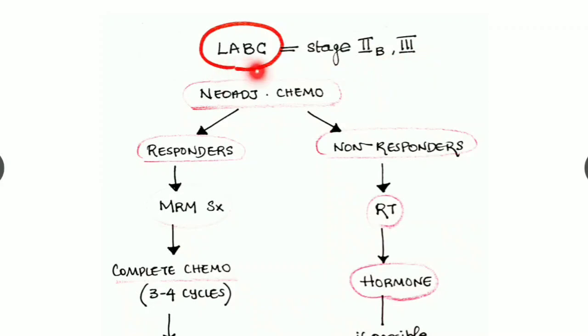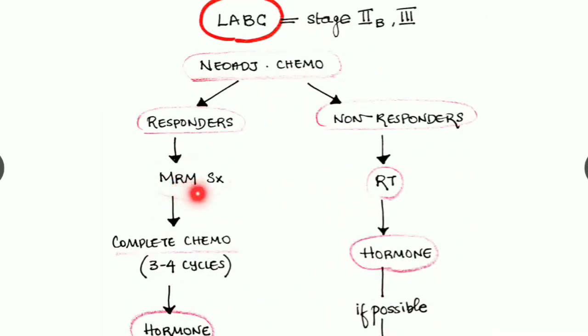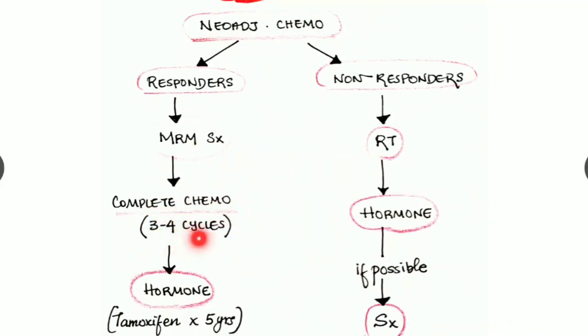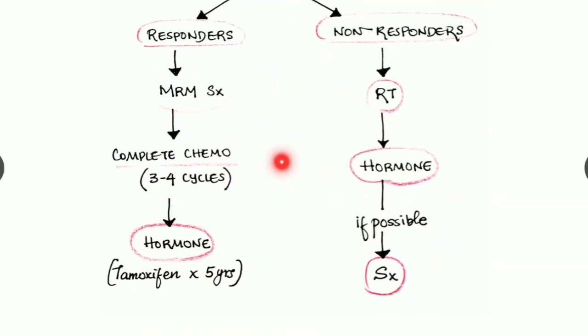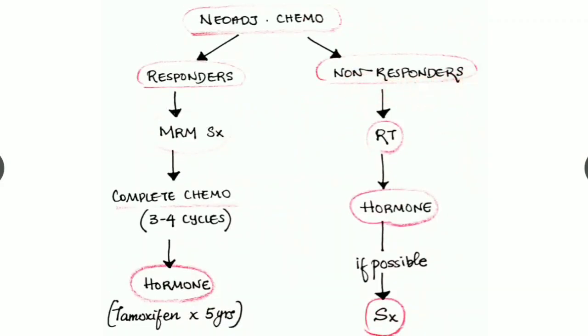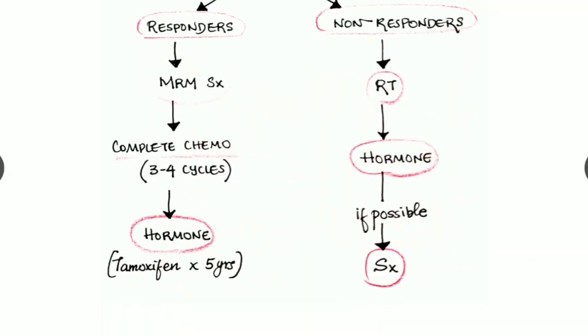For stage 2B and 3, it is the locally advanced breast carcinoma. We have to use neoadjuvant chemotherapy, and by that we will get two types of patients: the responders to the chemotherapy and non-responders. The responders can be taken for modified radical mastectomy, and we can complete the chemotherapy with 3 to 4 further cycles and go for hormone therapy like tamoxifen for around 5 years. In case of non-responders, we will go for radiotherapy followed by hormone therapy, and if possible we will do a surgery to debulk the lesion.